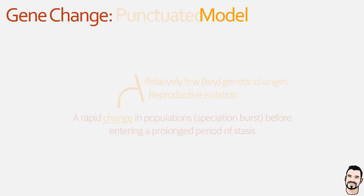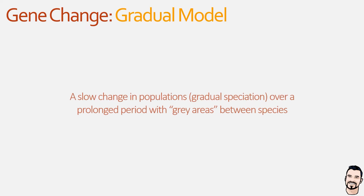Finally we have the gradual model. This is what we think of when we think about evolution — a slow and gradual change in species that at some point results in a new species developing. This is less black and white compared to the punctuated model and is a grey scale, as sometimes it can be very difficult to determine the time at which one species becomes another.